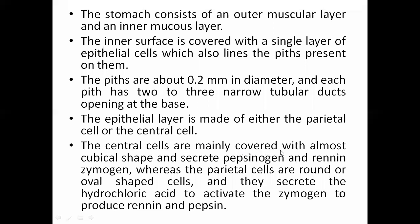The central cells are mainly cubical in shape and secrete pepsinogen and rennin (chymosin). The parietal cells are round or oval-shaped cells and they secrete hydrochloric acid (HCl) to activate the chymosin secreted by the central cells to ultimately produce rennin and pepsin.